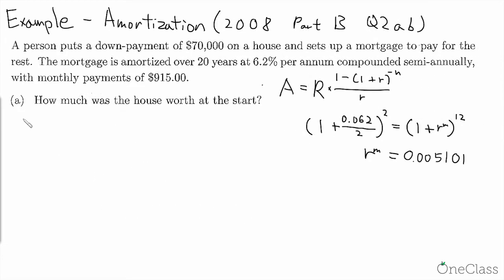For the next example of amortization, we pull it up from 2008 Part B Question 2. A person puts down a down payment of $70,000 on a house and sets up a mortgage to pay for the rest. The mortgage is amortized over 20 years at 6.2% per annum compounded semi-annually with monthly payments of $915.